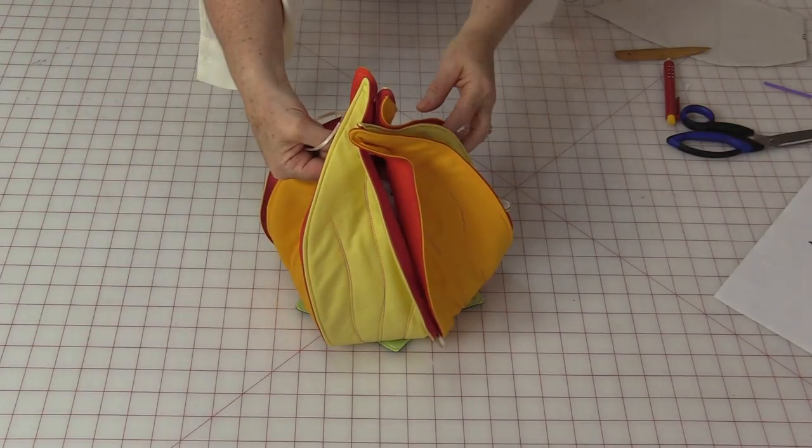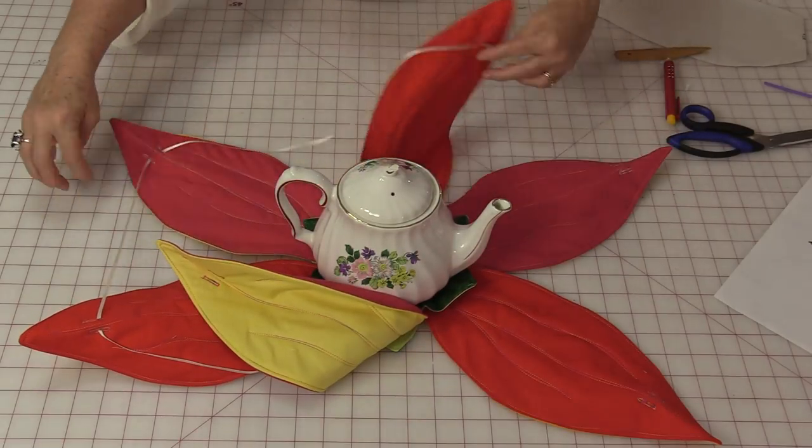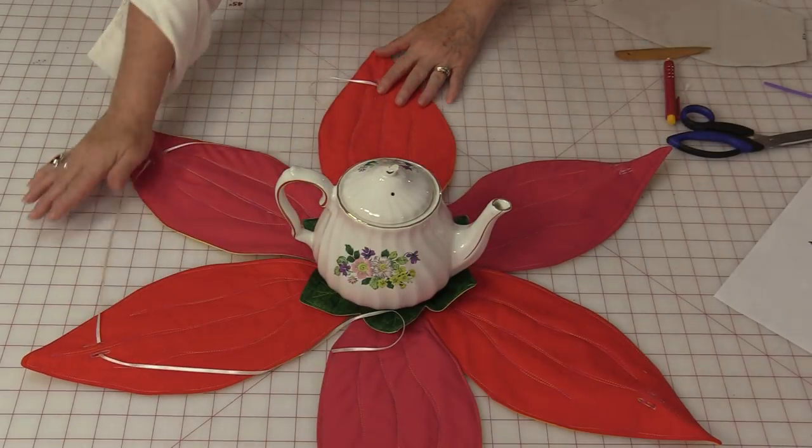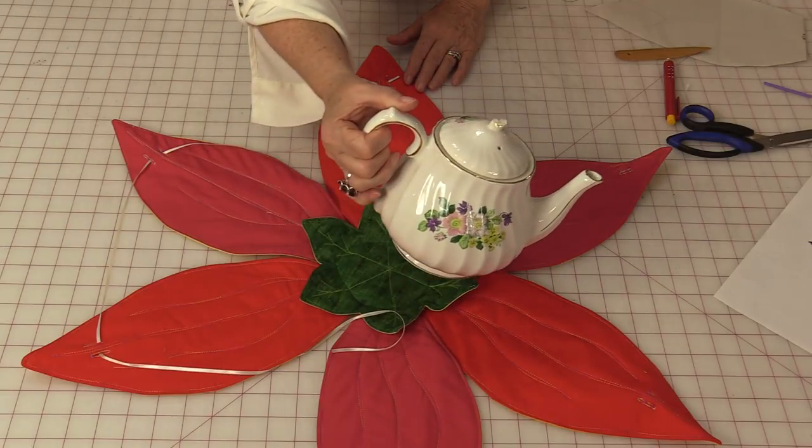When you're ready to serve the tea, if you'd like, you can just undo the ribbon and have all the petals fall open. You now have a nice table topper to serve your tea.